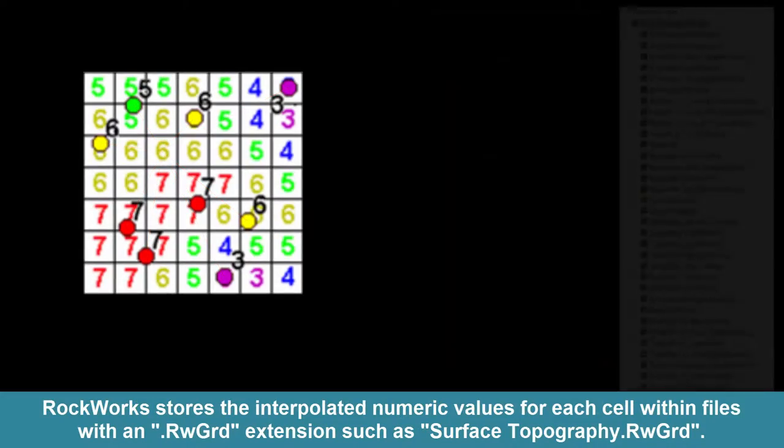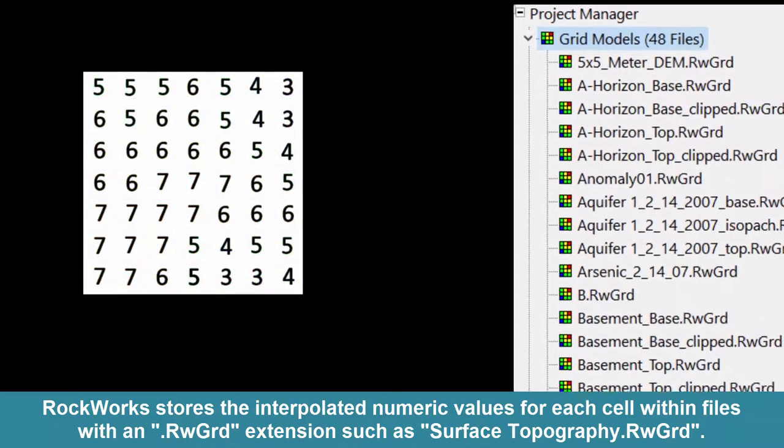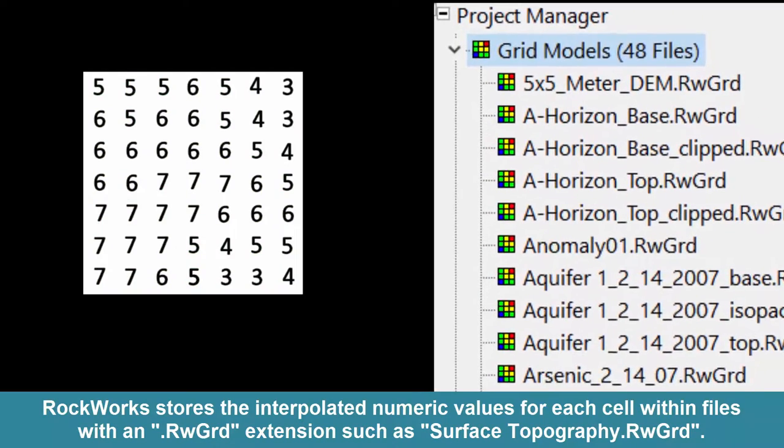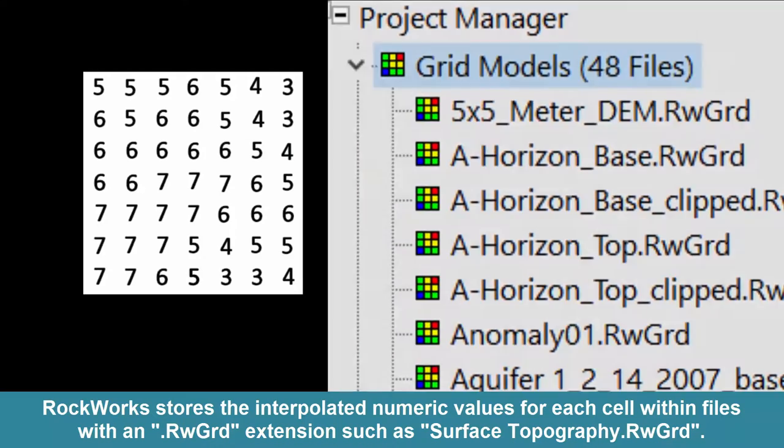Rockworks stores the interpolated numeric values for each cell within files with an rwgrd extension, such as surface-topography.rwgrd.